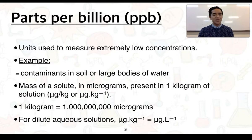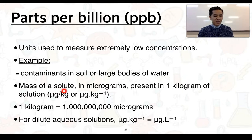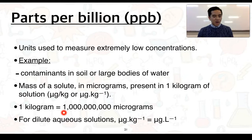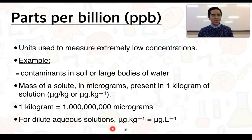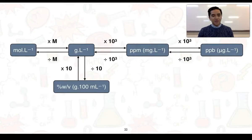Parts per billion is used for even smaller concentrations, such as contaminants in soil or large bodies of water. It represents the mass of a solute in micrograms present in 1 kilogram of solution. Since 1 kilogram contains 1 billion micrograms, you can see where parts per billion comes from. Again, assuming density equals 1 g/mL, micrograms per kilogram are often expressed as micrograms per litre.